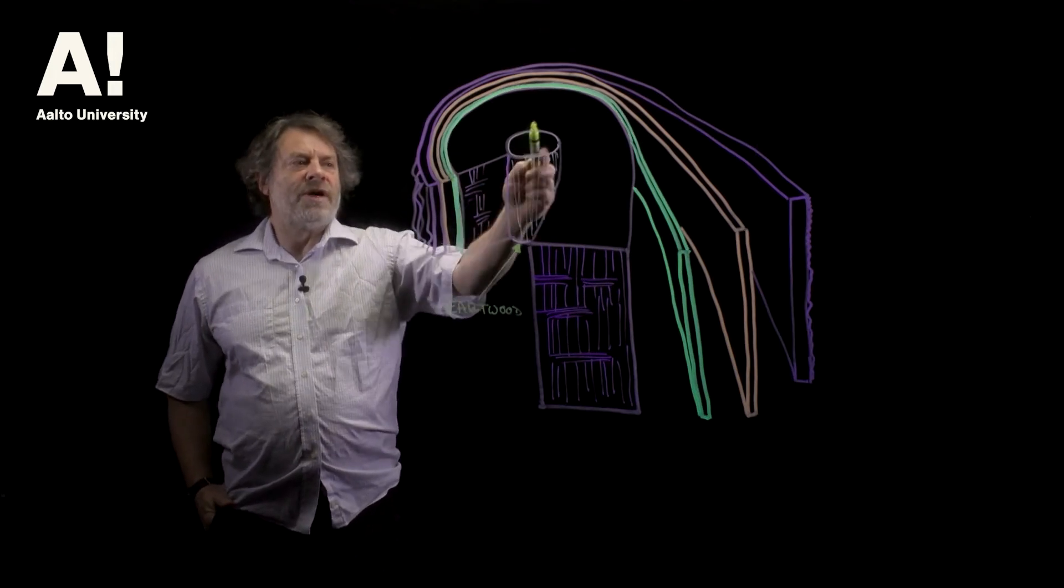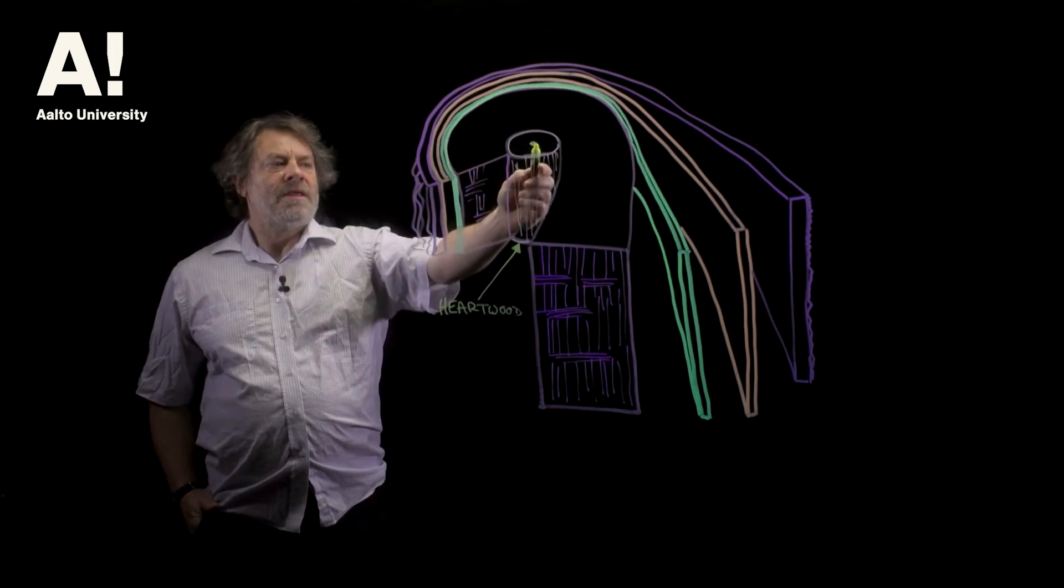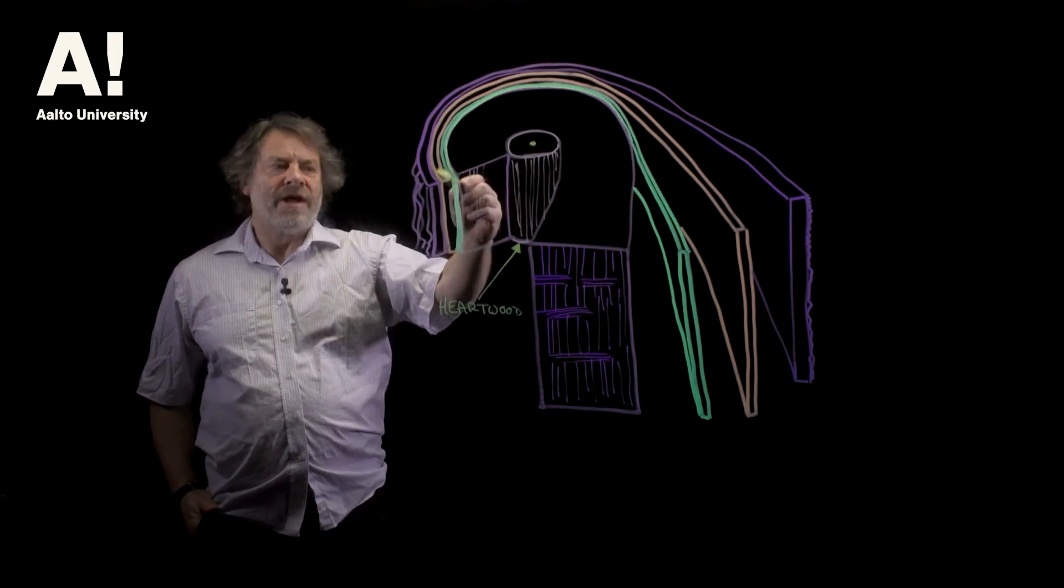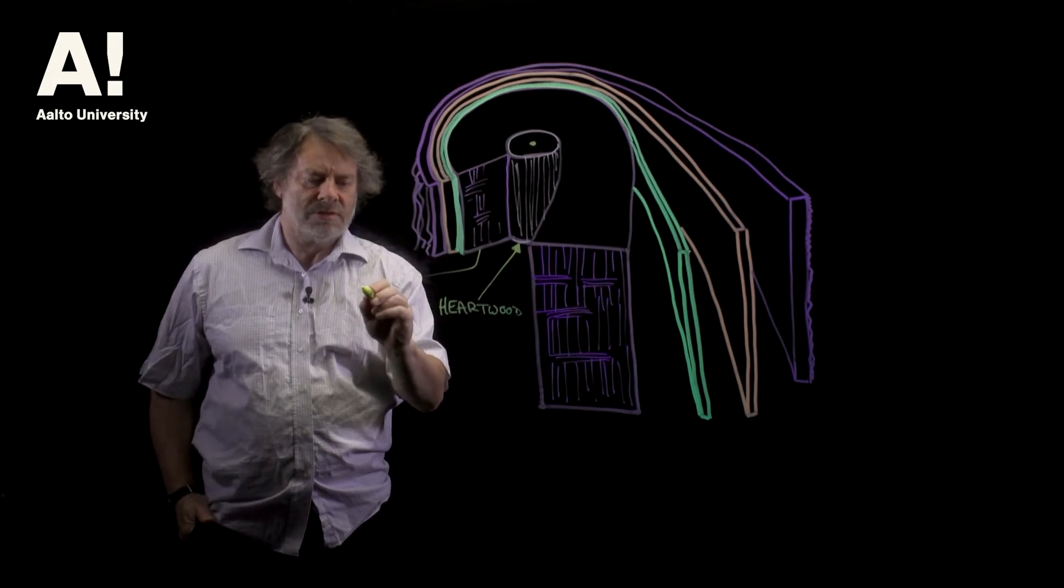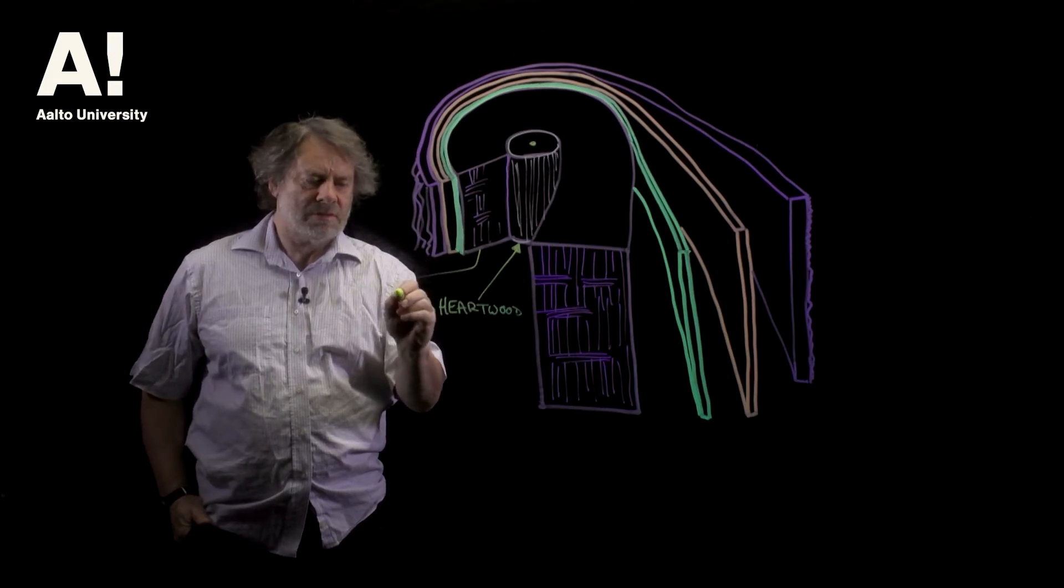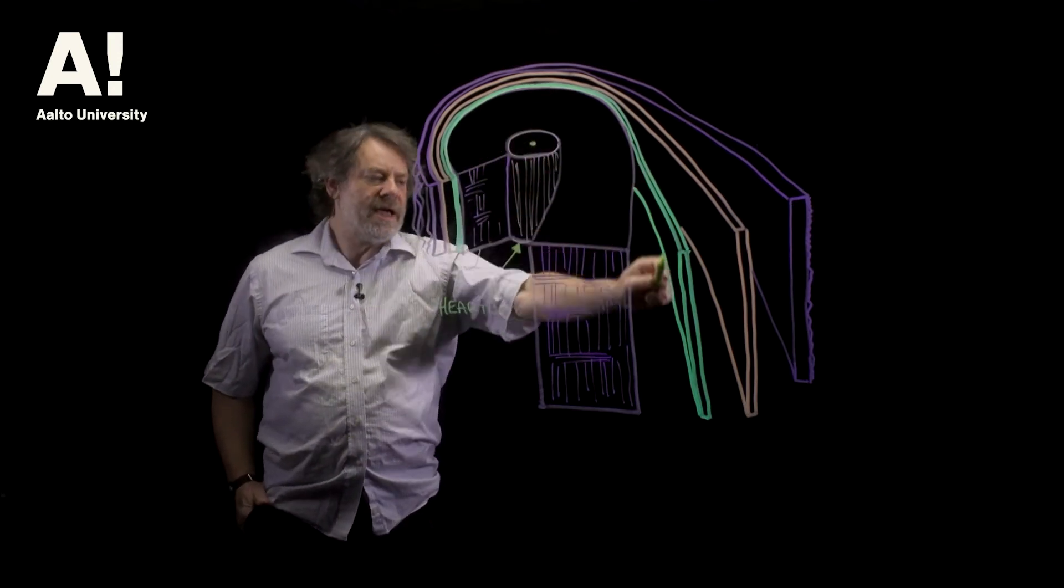And then the next layer out, right in the middle we have something called the pith, then the heartwood, and then the next layer out is the sapwood. And then this green layer here,